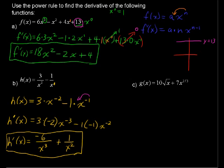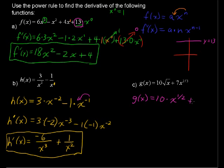On to the last example, g(x). Let's rewrite it first. This is 10 times x to the 1/2, because a square root is the same as a 1/2 power. So g(x) equals 10 times x to the 1/2, plus 7 times x to the 2/3 — that part is already written for us.